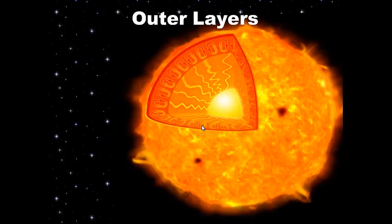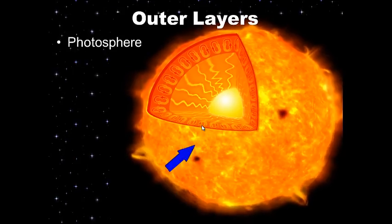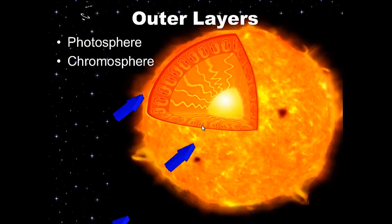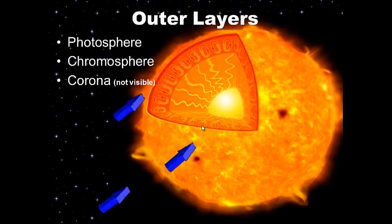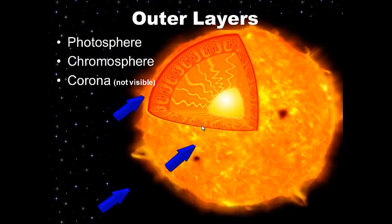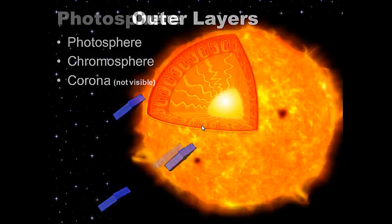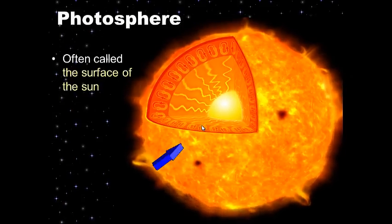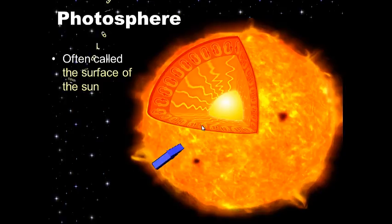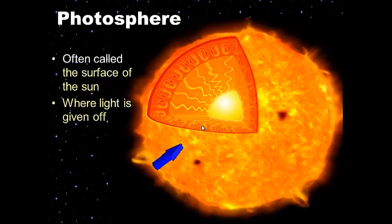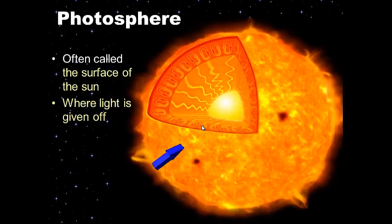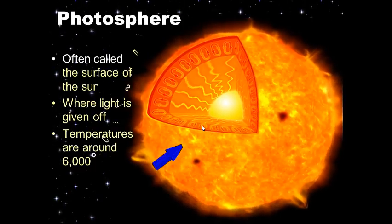Now let's look at the outer layers of the Sun: the photosphere, the chromosphere, and the corona. The photosphere is often called the surface of the Sun because it's where light is given off. The light we use to see comes from the photosphere — if you were to look at the Sun, you would be looking at the photosphere. Don't look at the Sun, though! Temperatures are around 6,000 degrees Celsius.